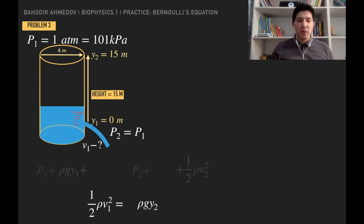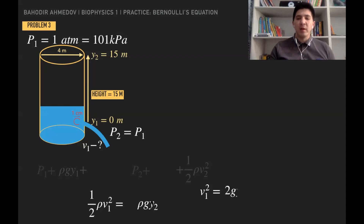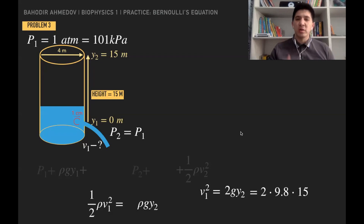After all simplifications, Bernoulli's equation reduces to: ½ρv1² = ρ*g*y2. The density ρ cancels from both sides, giving v1 = √(2*g*y2) = √(2 × 9.8 × 15) = √294 ≈ 17.14 m/s. We've now solved three problems using Bernoulli's equation. There are more problems and exercises on the course page — go take the online quizzes to check what you've learned.